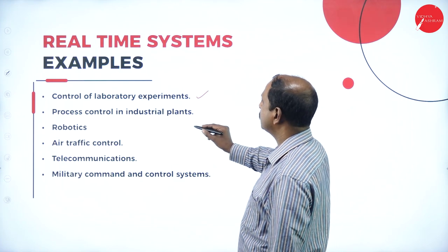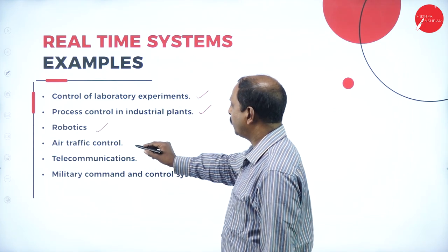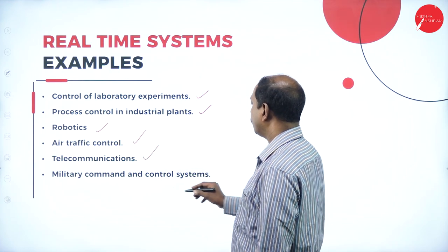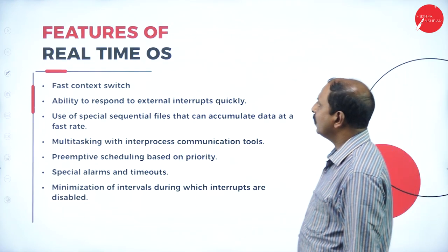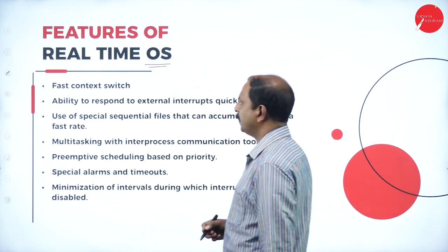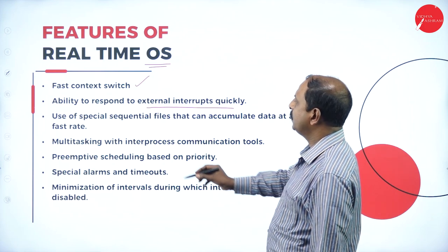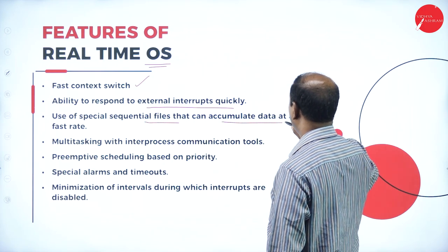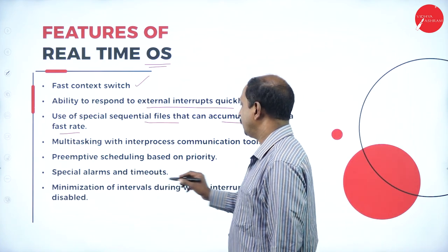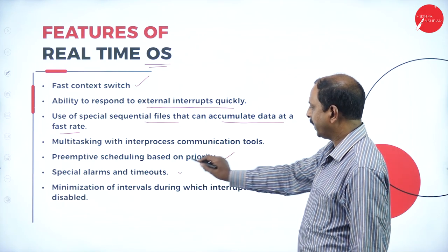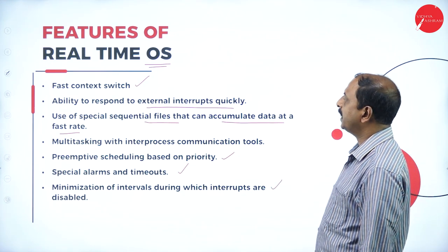Examples of real-time systems include: control of laboratory experiments, process control in industrial plants and automobile manufacturing, robotics, air traffic control, telecommunication systems, and military command and control systems. Features of real-time operating systems include: fast context switch, ability to respond to external interrupts quickly, use of special sequential files that can accumulate data at a fast rate, multitasking with inter-process communication (IPC) tools, preemptive scheduling based on priority, and special alarms and timeouts with minimization of intervals during which interrupts are disabled.